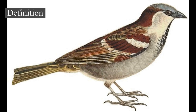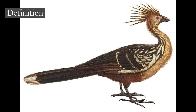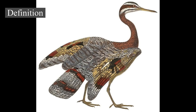Avialae, initially proposed to replace the traditional fossil content of Aves, is often used synonymously with the vernacular term 'bird' by these researchers. Most researchers define Avialae as a branch-based clade, though definitions vary. Many authors have used a definition similar to 'all theropods closer to birds than to Deinonychus,' with Troodon being sometimes added as a second external specifier. Avialae is also occasionally defined as an apomorphy-based clade. Jack Gauthier, who named Avialae in 1986, re-defined it in 2001 as all dinosaurs that possessed feathered wings used in flapping flight and the birds that descended from them.